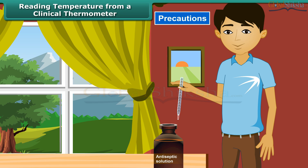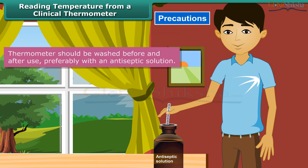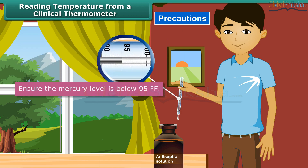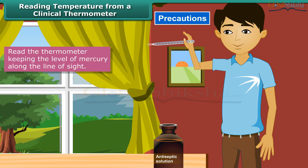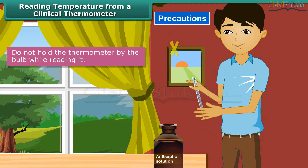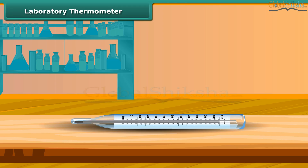Precautions to be observed while reading a clinical thermometer are as follows: the thermometer should be washed before and after use, preferably with an antiseptic solution; ensure the mercury level is below 95°F; read the thermometer keeping the level of mercury along the line of sight; handle the thermometer with care — if it hits against a hard object, it can break; do not hold the thermometer by the bulb while reading it.